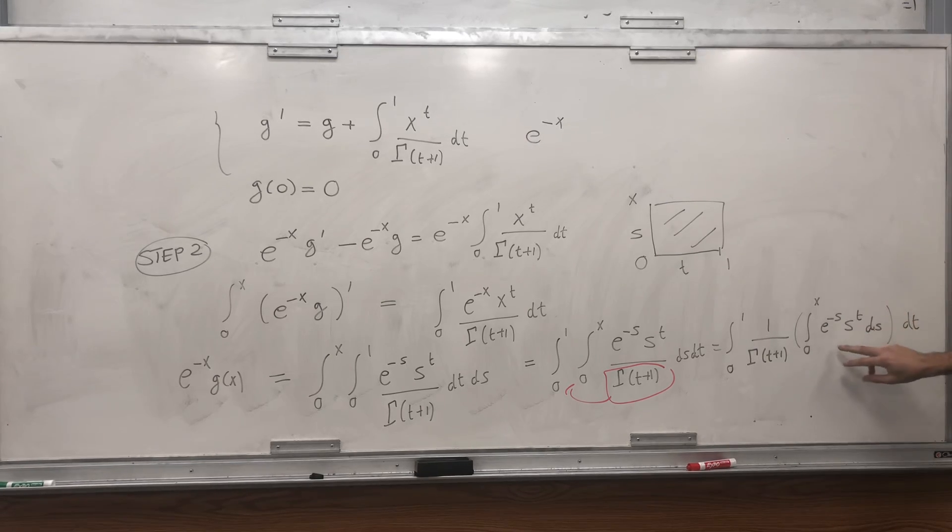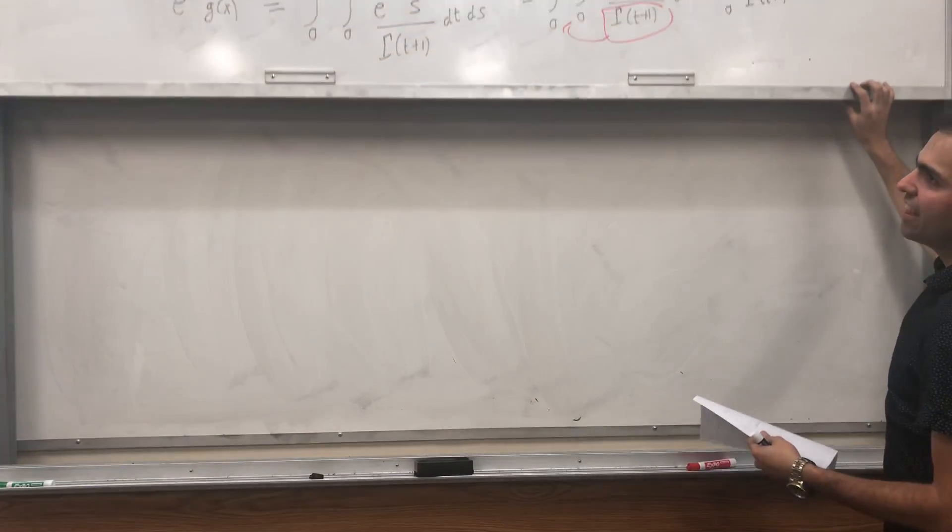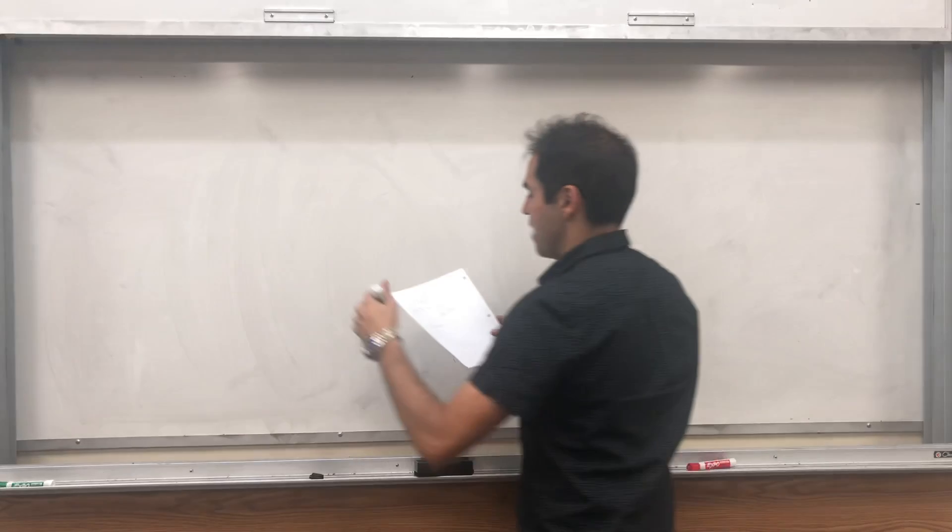All right, now you may recognize this almost as a gamma function. So this should be gamma of t plus 1, if only x is infinity. But remember, we want to show that as x goes to infinity, something happens. So indeed, what we get then at the end, so step 3, now let's take the limit as x goes to infinity of this term.